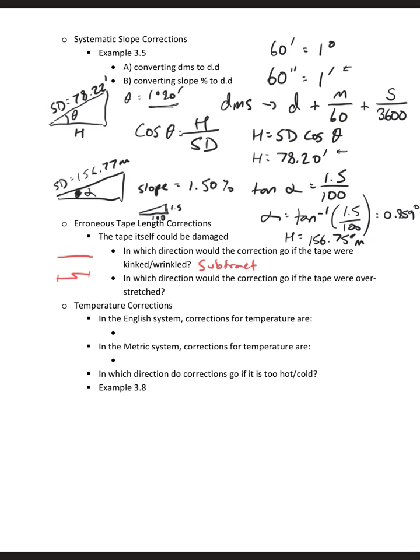I would subtract the correction because I'm going to be measuring long, and I would have to subtract whatever the kink or wrinkled correction is to get to the true measurement. If the tape were over-stretched, then the reading that I read off the tape is going to be lower than what it should have been, and so I would have to add. So it just takes a little bit of thinking about what would actually happen in order to make these adjustments for an erroneous tape correction.